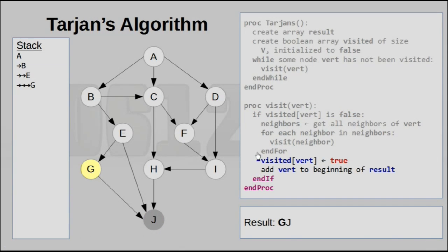Since G has no more neighbors, we can basically finish up. We mark G as true, and we add G to the beginning of result.